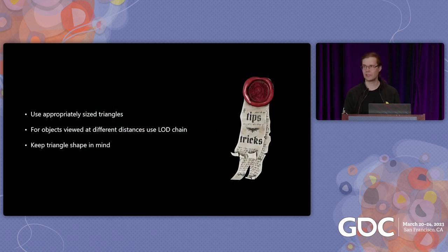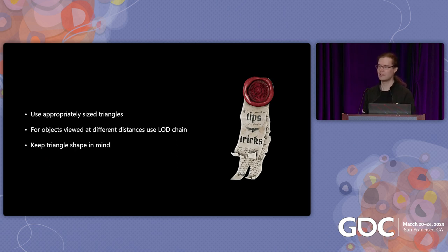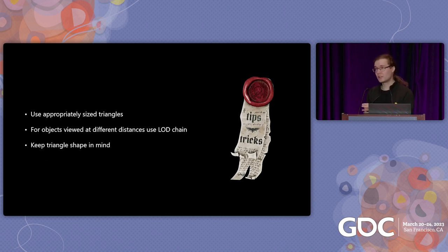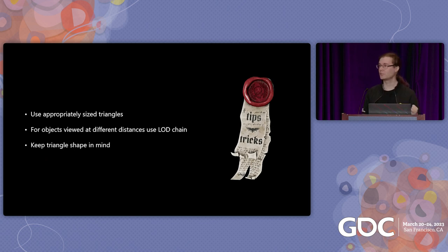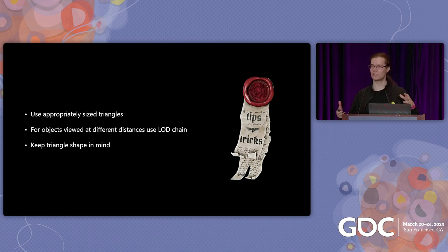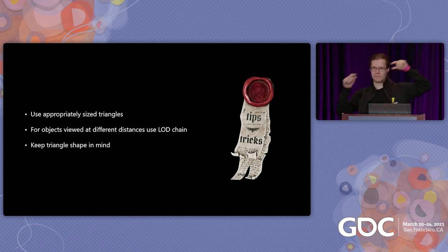What can we do to solve this? Use appropriately sized triangles — preferably as large as you can get away with, maybe around 10 pixels depending on your engine. If your objects are viewed at different distances — for example, things running towards you to murder you, which is very common in games — create different versions of that asset with larger and larger triangles. That's why you do LOD chains. And lastly, keep triangle shape in mind: don't create the thin, long boys.